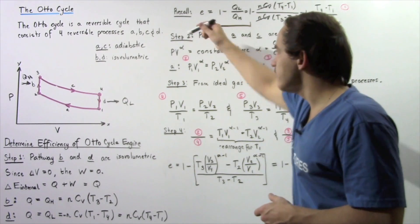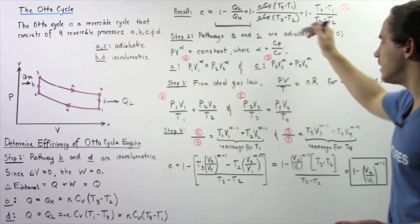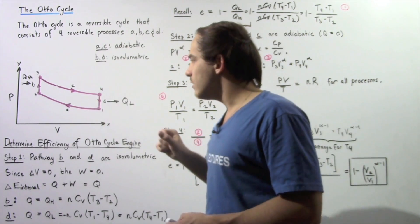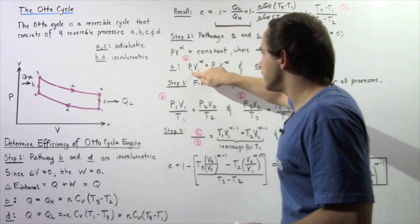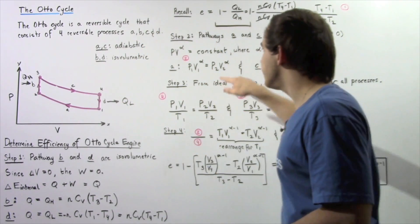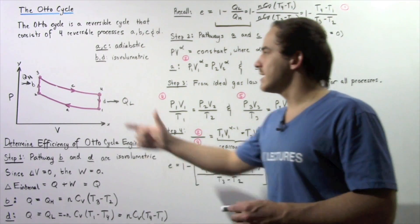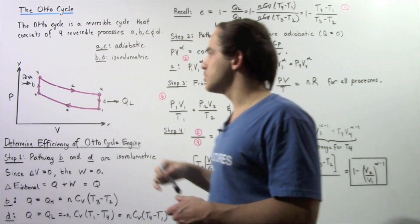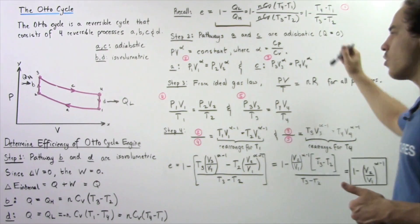Alpha is simply the ratio of the molar specific heat at constant pressure to the molar specific heat at constant volume. For process A, beginning at position 1 and ending at position 2: P1 times V1 raised to alpha equals P2 times V2 raised to alpha. Let's call this equation 2. For process C: P3 times V3 raised to alpha equals P4 times V4 raised to alpha. Let's call this equation 3.